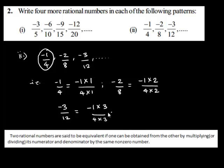This shows that these rational numbers — negative 1 upon 4, negative 2 upon 8, negative 3 upon 12 — are equivalent rational numbers. Let us see the definition of equivalent rational numbers. Two rational numbers are said to be equivalent if one rational number can be obtained from the other by multiplying or dividing its numerator as well as its denominator by the same non-zero number.